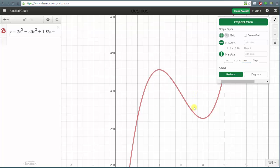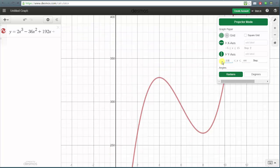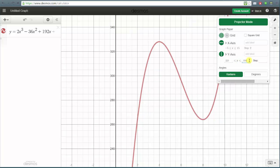Notice now we have a very nice view of the graph to determine the local maximum and local minimum. If we wanted to we could continue adjusting the window. For example we could change the y min to 225 and the y maximum to 350. Let's go ahead and use this window. So we'll exit the settings.